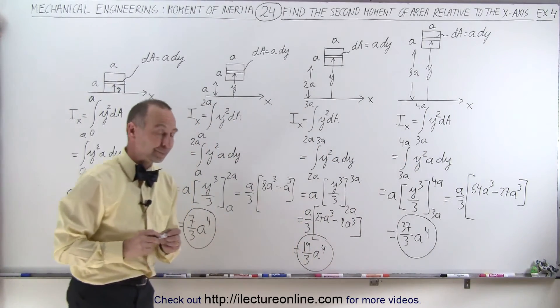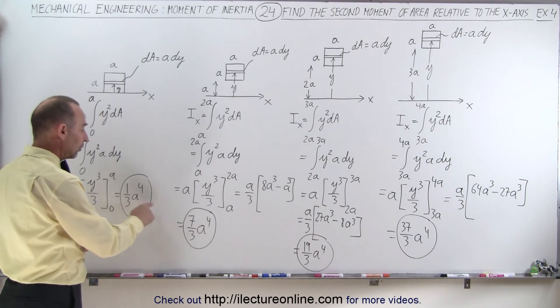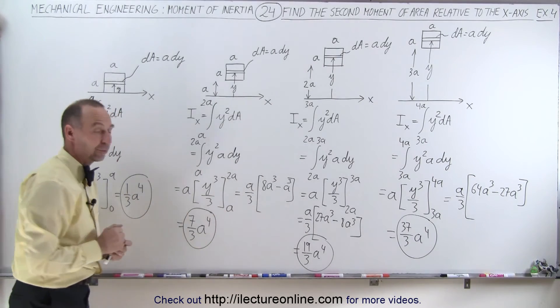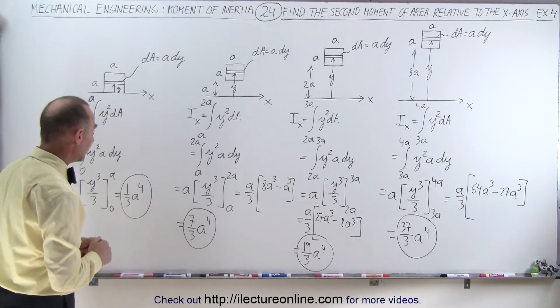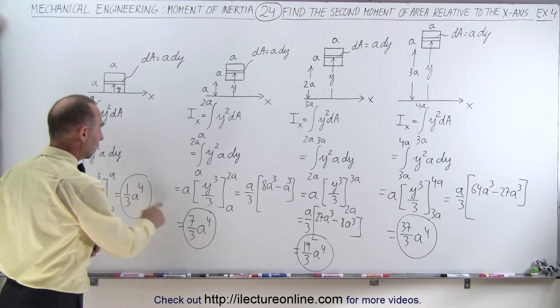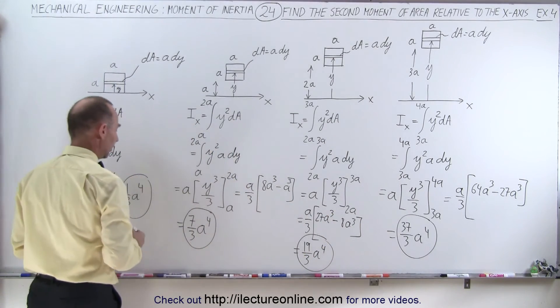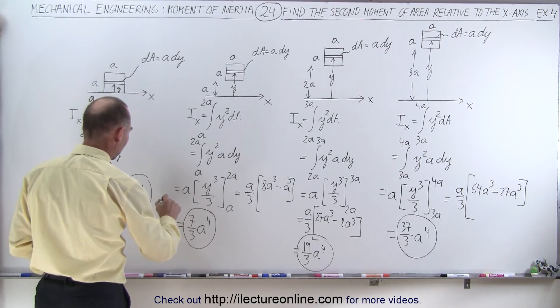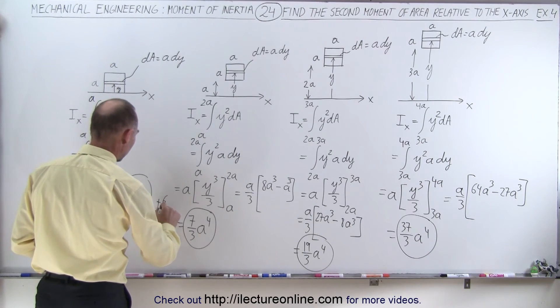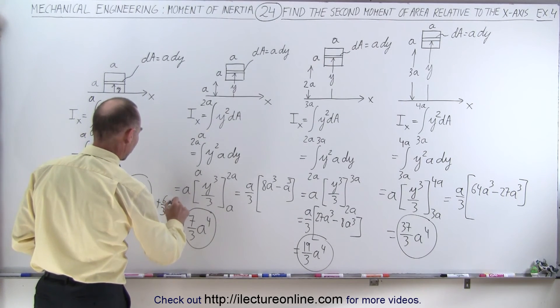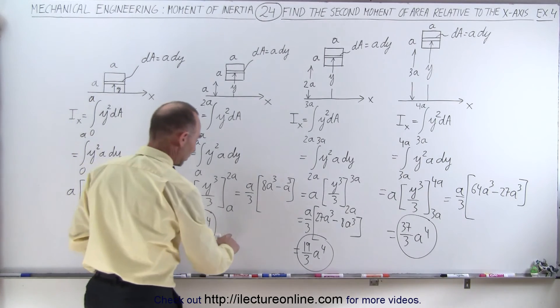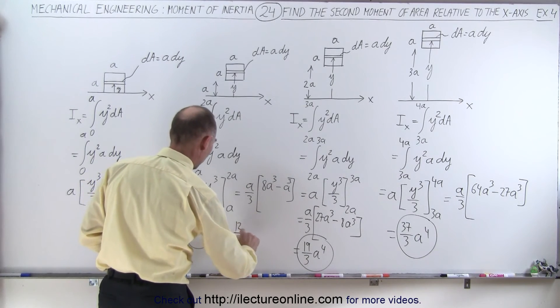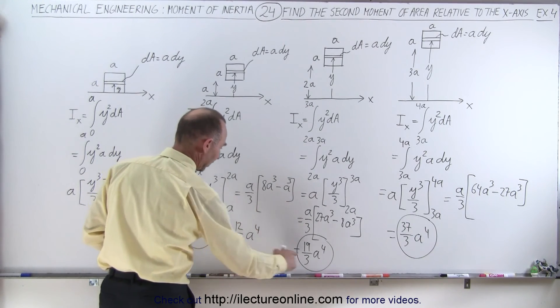And now let's see if there's a pattern. Notice that all of the terms have a to the fourth in them, all have divided by 3, because we have y squared integrated, it becomes y cubed over 3. But in the numerator we have a 1, a 7, a 19, and a 37. So for the numerator, if I add 6 to 1, I get 7. And here, if I add 12 over 3, this plus this, I get that term.